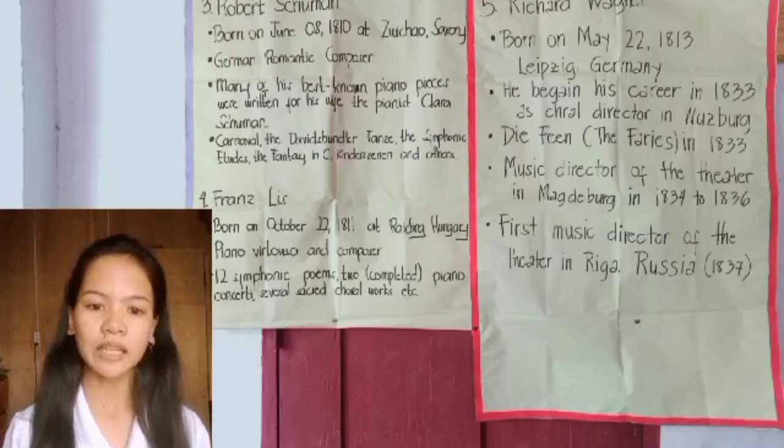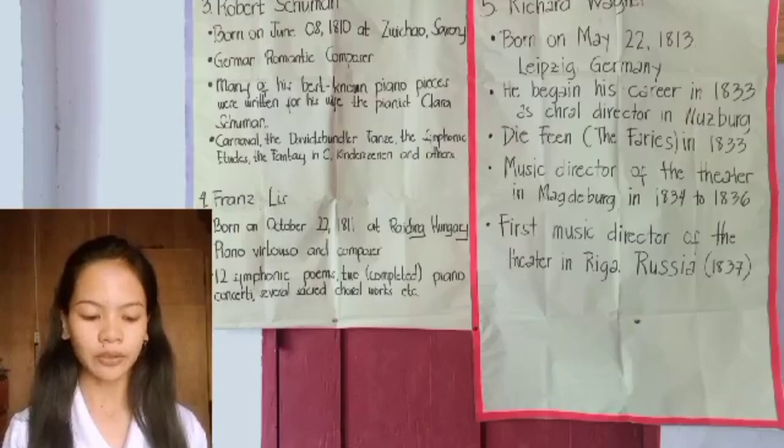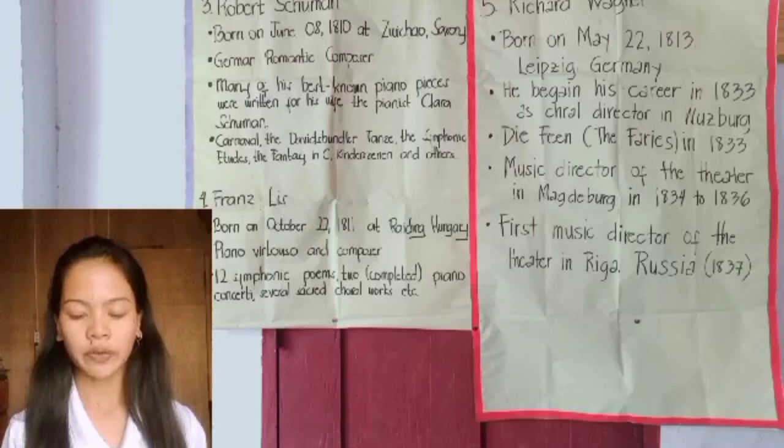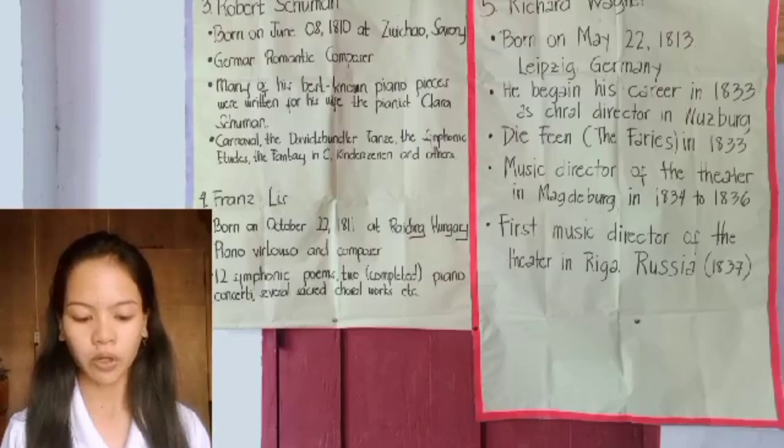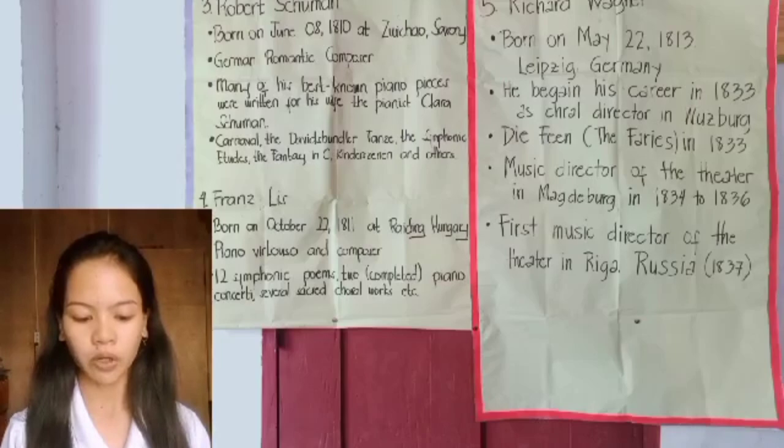Robert Alexander Schumann had been mentally unstable all of his life, suffering periodic attacks of severe depression and nervous exhaustion. In 1854, after attempting suicide by drowning, he was sent to a private asylum where he died two and a half years later at the age of 46, though the exact cause is debated.